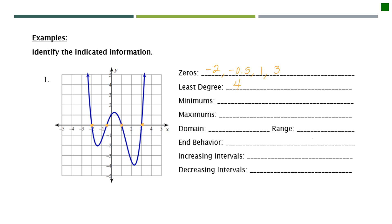For the minimums, I'm looking for ordered pairs. The minimums are here and here. For the first purple point, it looks like it's about negative 1.5 to the left and down negative two, so the ordered pair is about (−1.5, −2). The other minimum on the right side of the y-axis looks like it's at about 2.25, and then it's down four, so (2.25, −4).